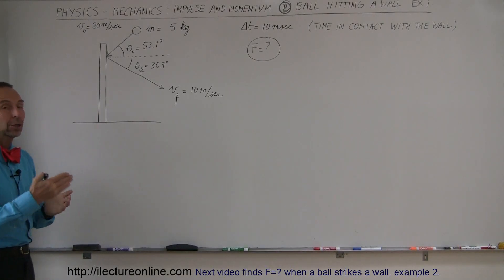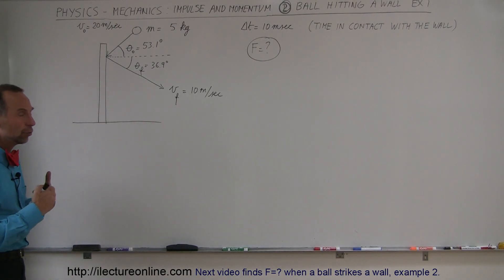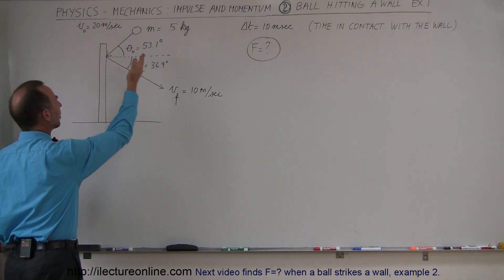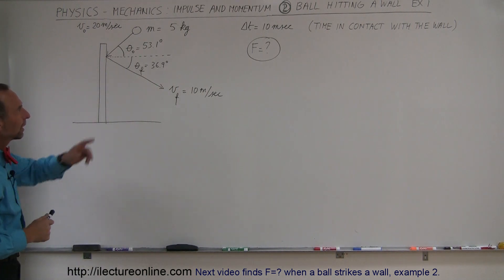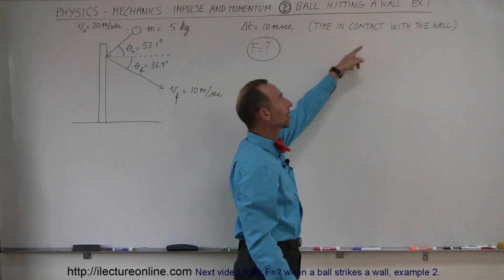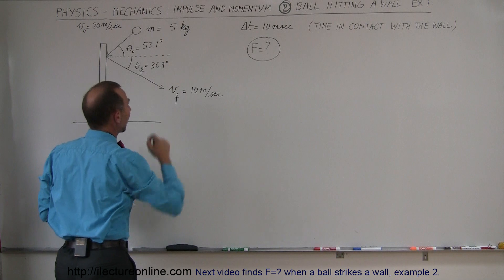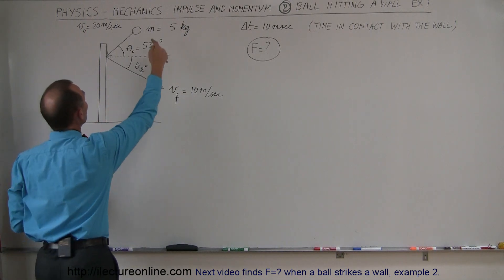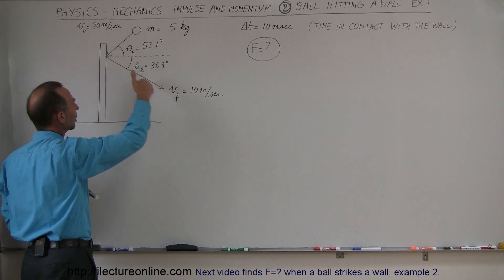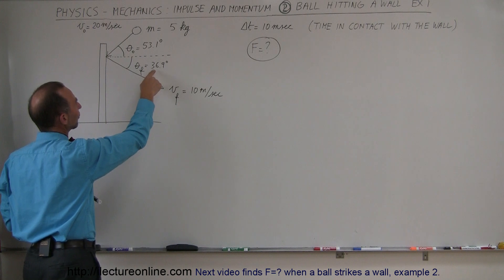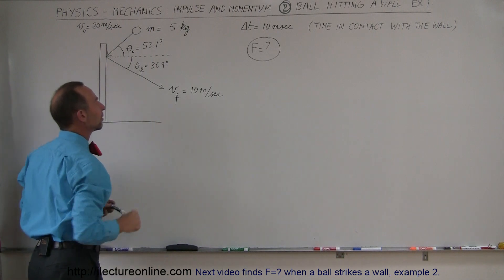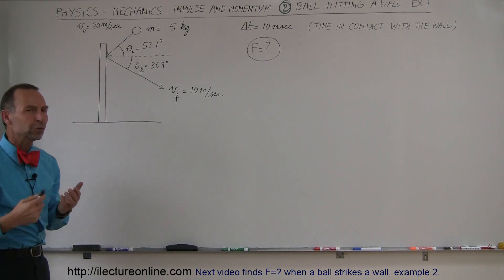We're going to see an example of a ball hitting a wall and use the concept of impulse to figure out the force between the ball and the wall. The contact lasts about 10 milliseconds. The ball has a mass of 5 kilograms, hits the wall at an angle of 53.1 degrees relative to the horizontal, then ricochets away at 36.9 degrees. The initial velocity is 20 meters per second, the final velocity is 10 meters per second.